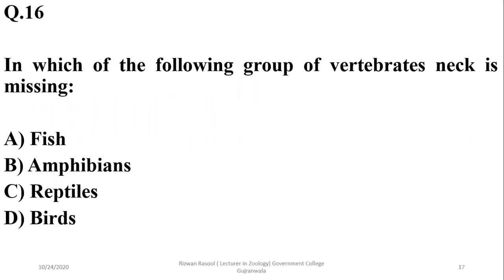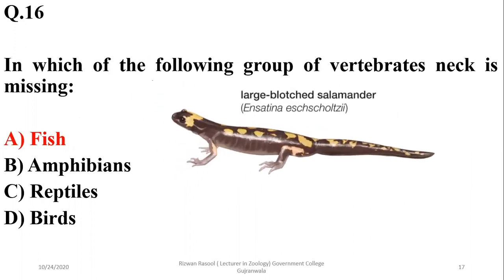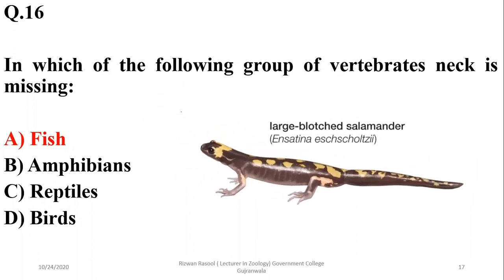In which of the following groups of vertebrates is the neck missing? The neck is not observed in fishes, but certain amphibians also have neck vertebrae. Reptiles have developed neck vertebrae as well as twisting ability, and birds and mammals have well-developed neck vertebrae. So the right option is A — fishes.